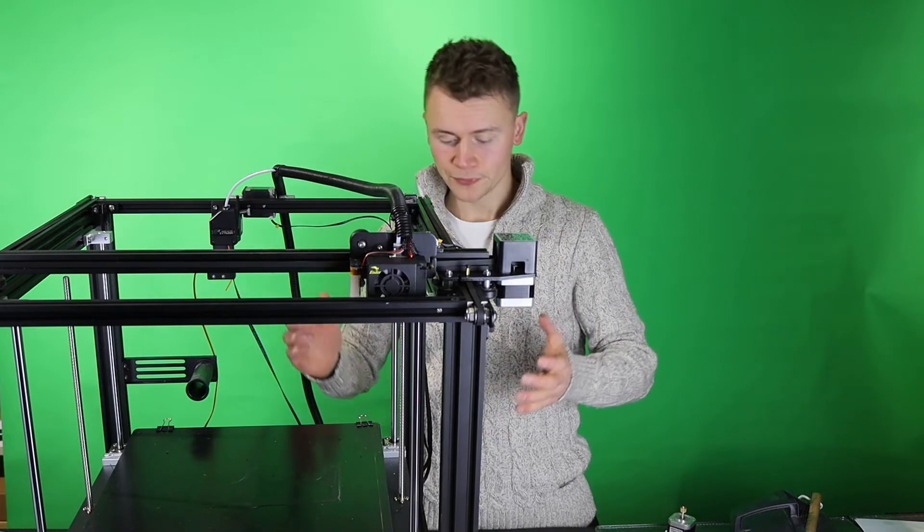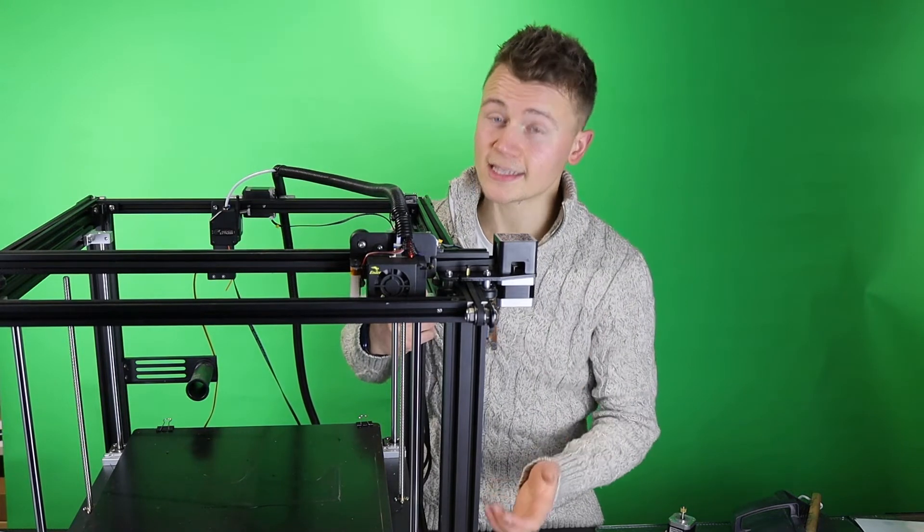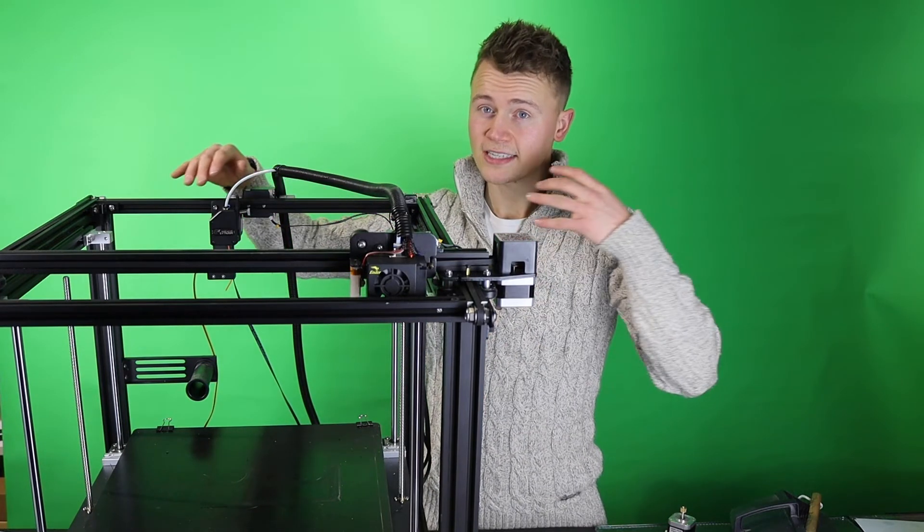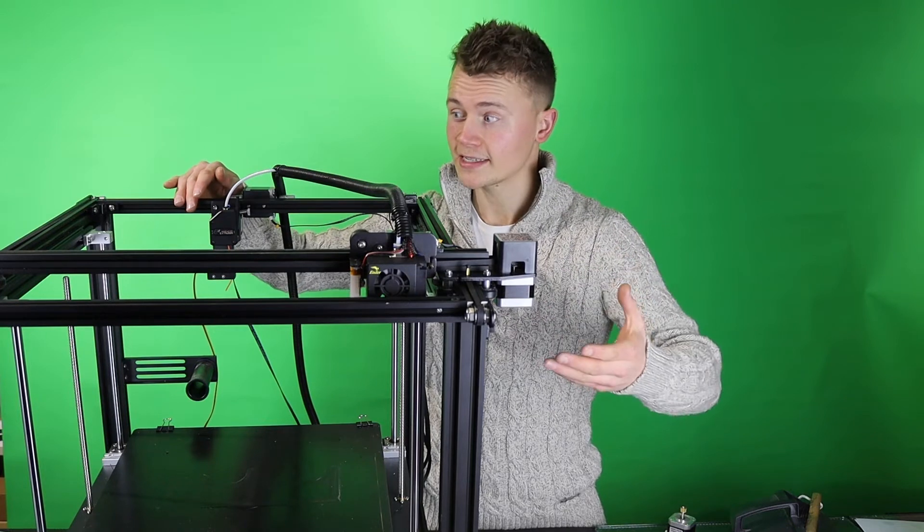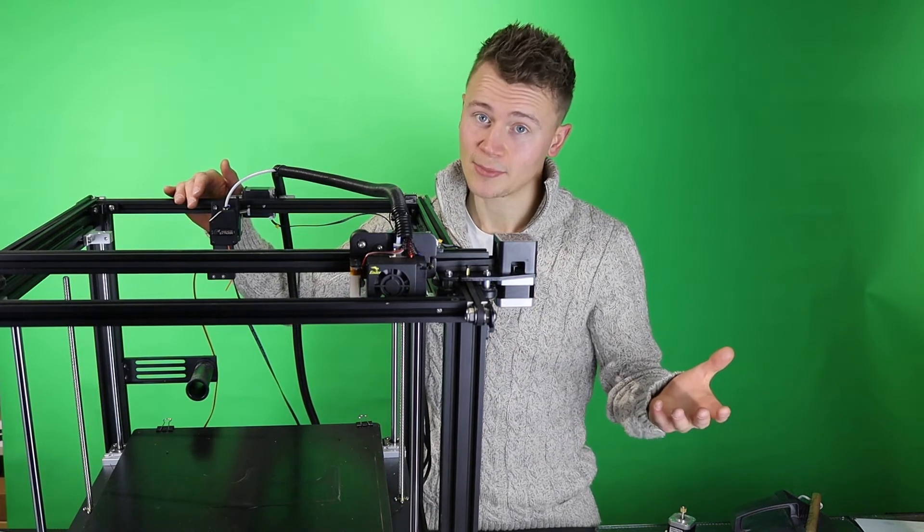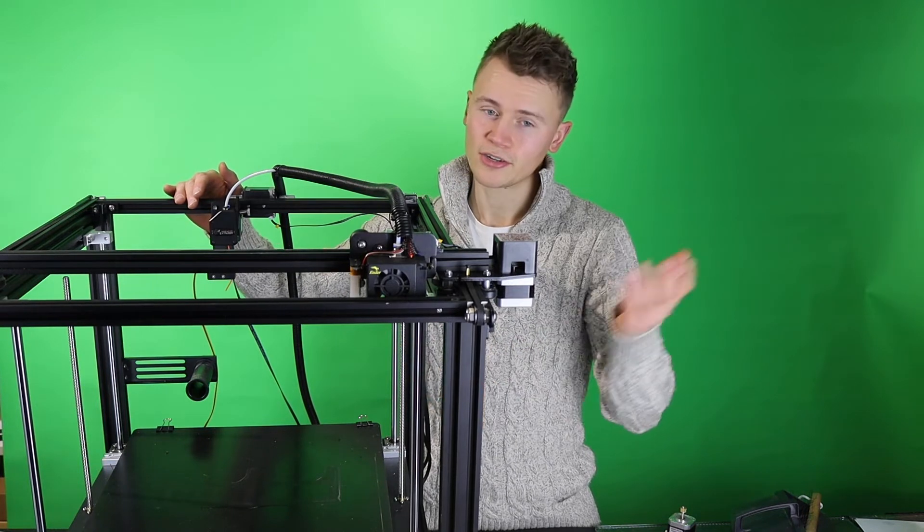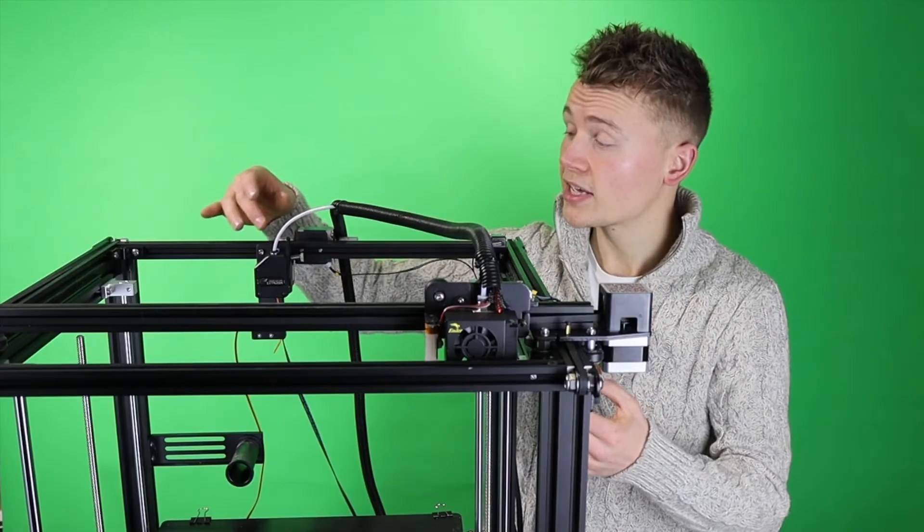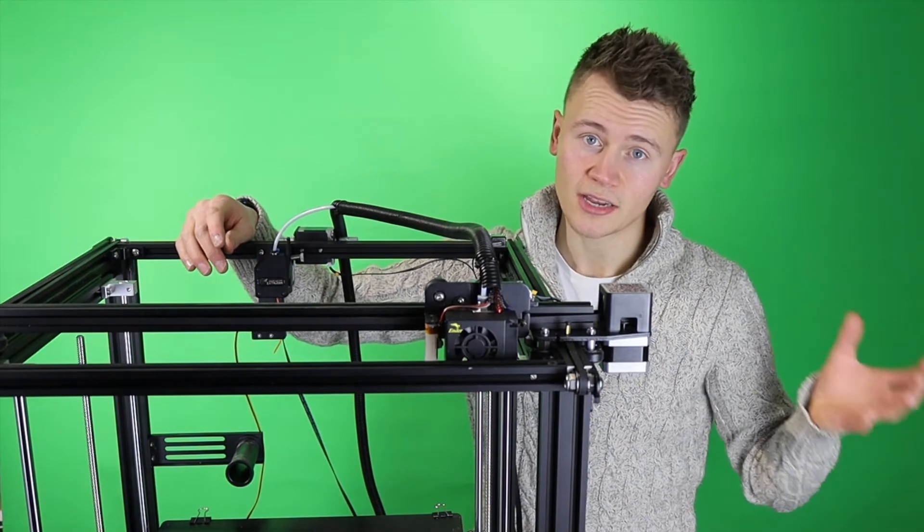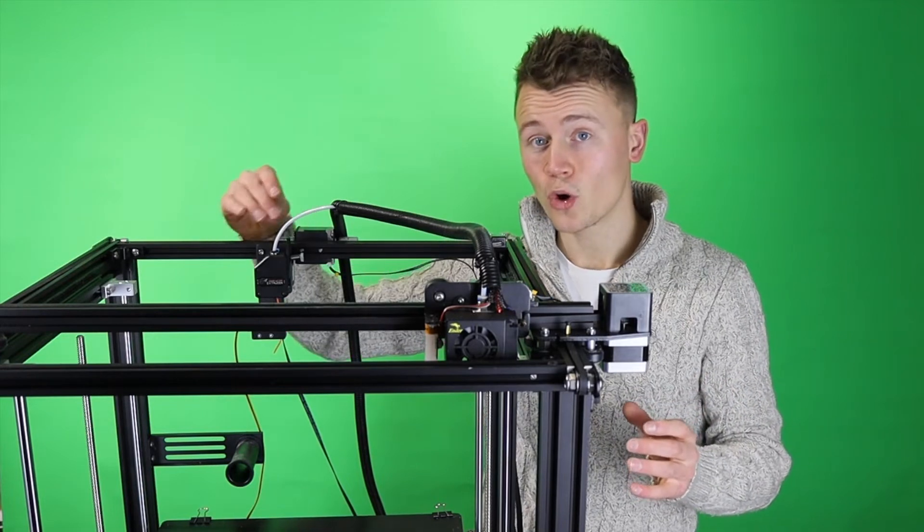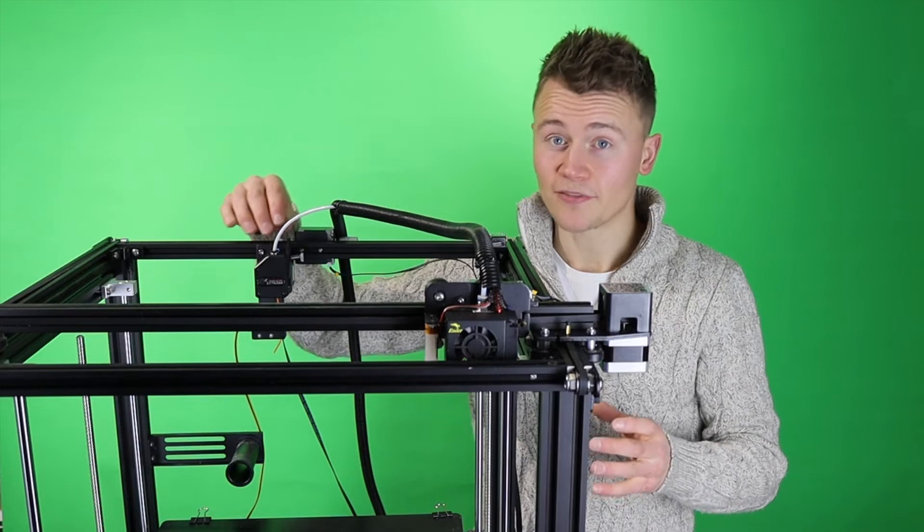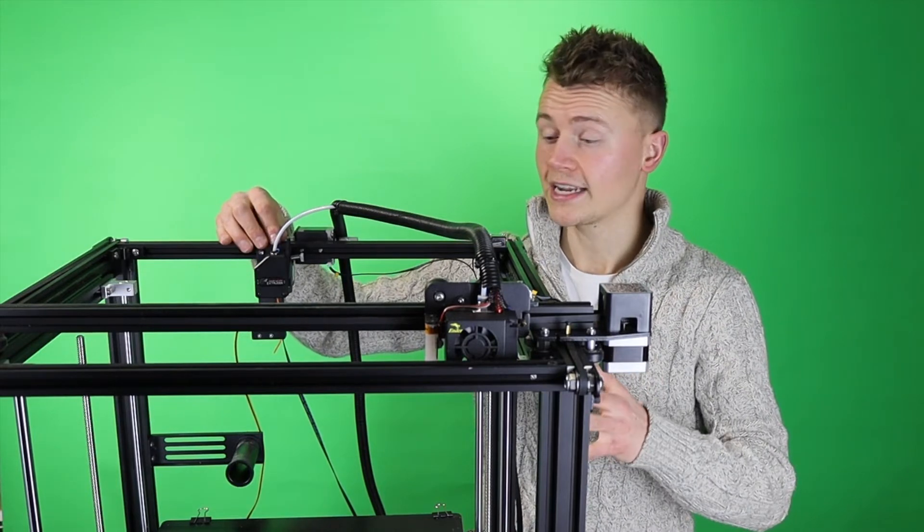The final thing to do is update the e-steps. This just ensures that the amount the stepper turns correlates to the amount the printer thinks should be extruded. So effectively if you tell it to extrude 10 millimeters it extrudes 10 millimeters rather than less or more. Most drive gears come with a value for this and then you can fine tune it afterwards if you need to. This one is 415 steps per millimeter and so that is the value I'm going to need to plug into the printer.